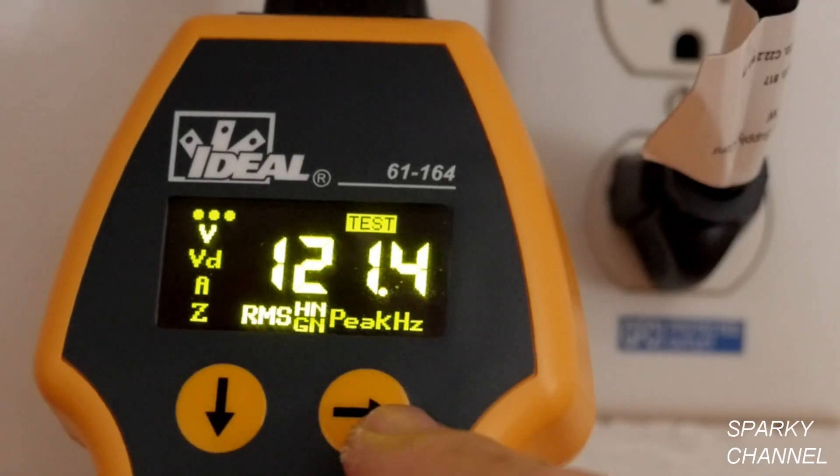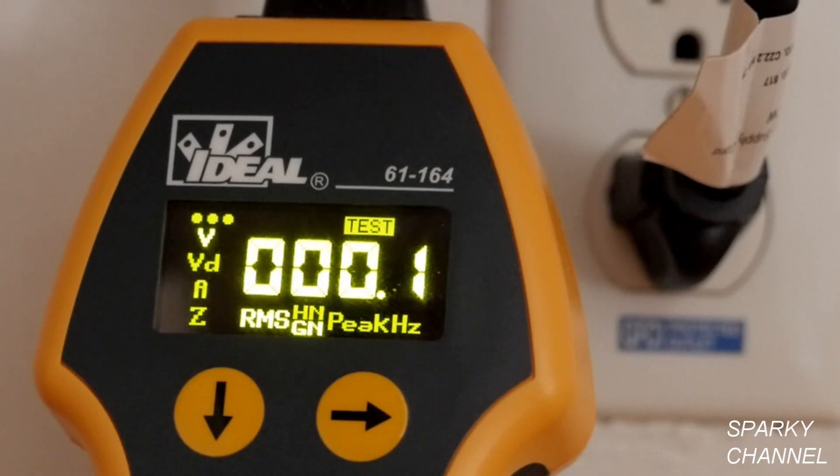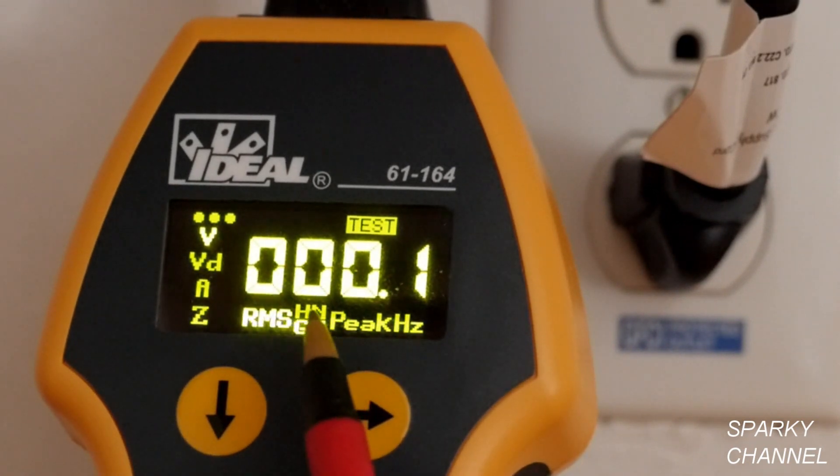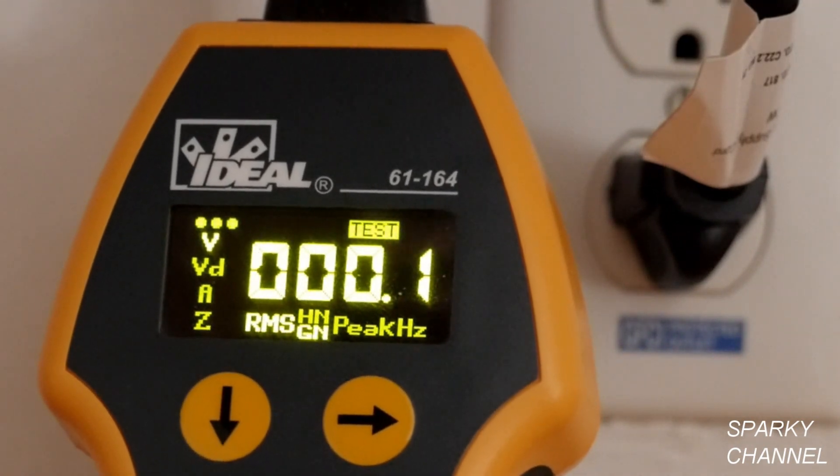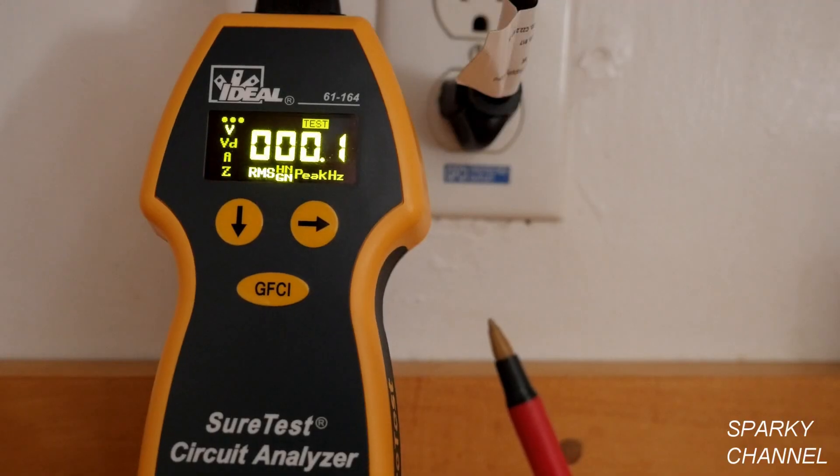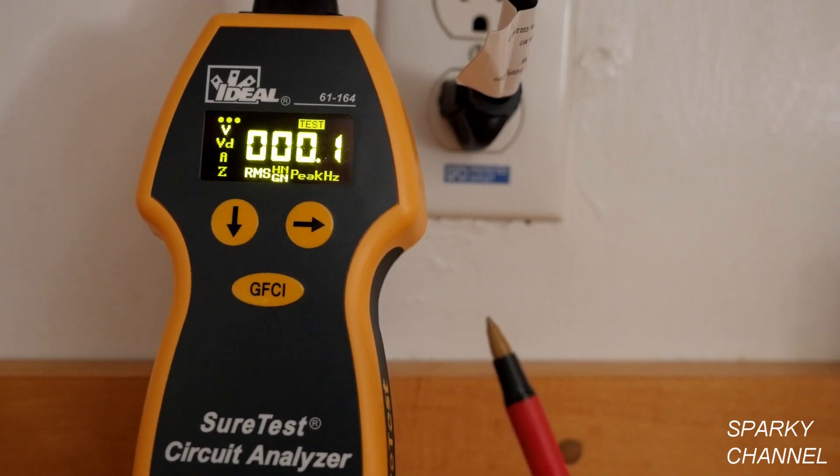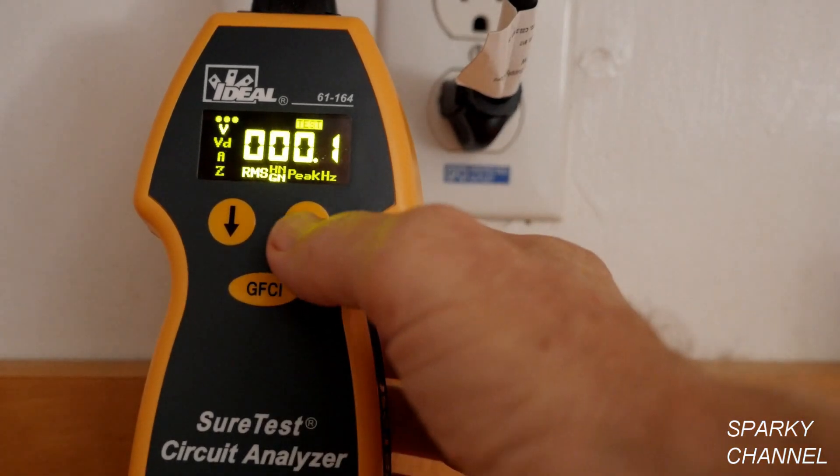Now if I press the horizontal arrow, this gives you the voltage between the ground and the neutral. This should never be more than 2 volts AC. This would show you a problem if it was more than 2 volts AC that would need to be fixed.